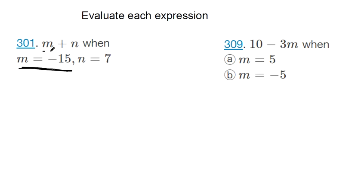You're going to plug negative 15 in for m and plug 7 in for n. So if I do that, plugging negative 15 where m goes and adding 7 where n goes,